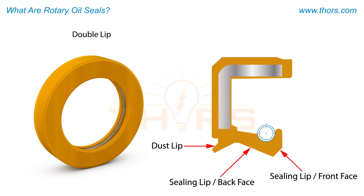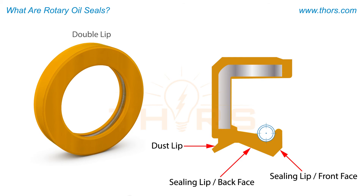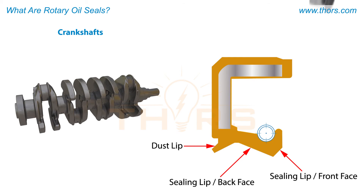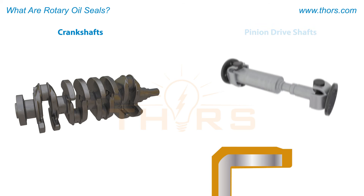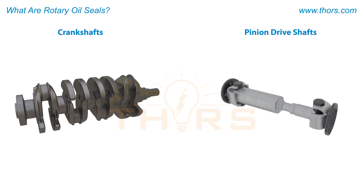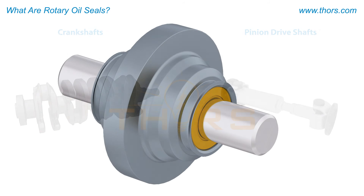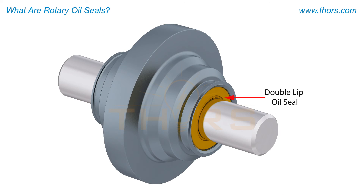Double lip oil seals have both a sealing lip and also what is referred to as a dust lip. These seals are commonly used on crankshafts and pinion drive shafts.